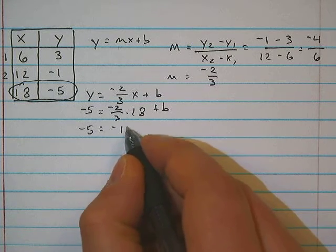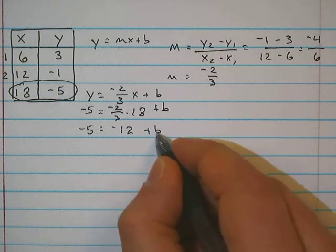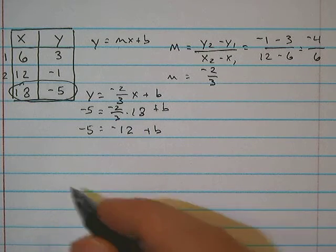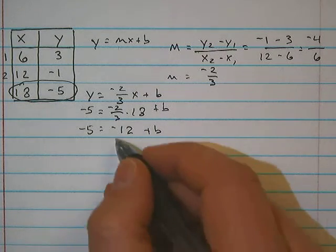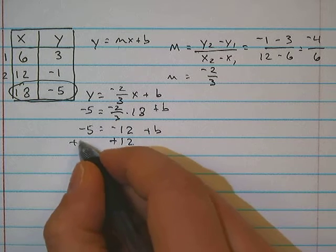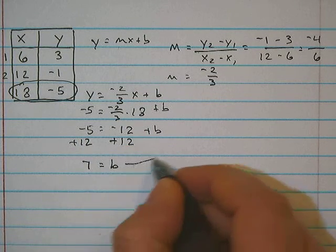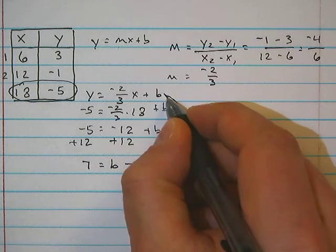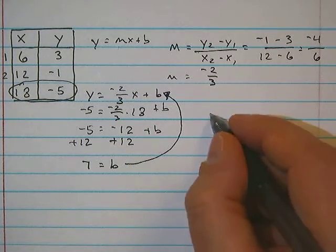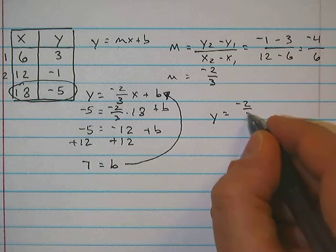Negative 5 is equal to, well, negative 2 times 18 is negative 36, divided by 3 is negative 12 plus b. I need to isolate the variable by removing the constant by adding 12 to both sides. Negative 5 plus 12 is positive 7, and that's equal to b.